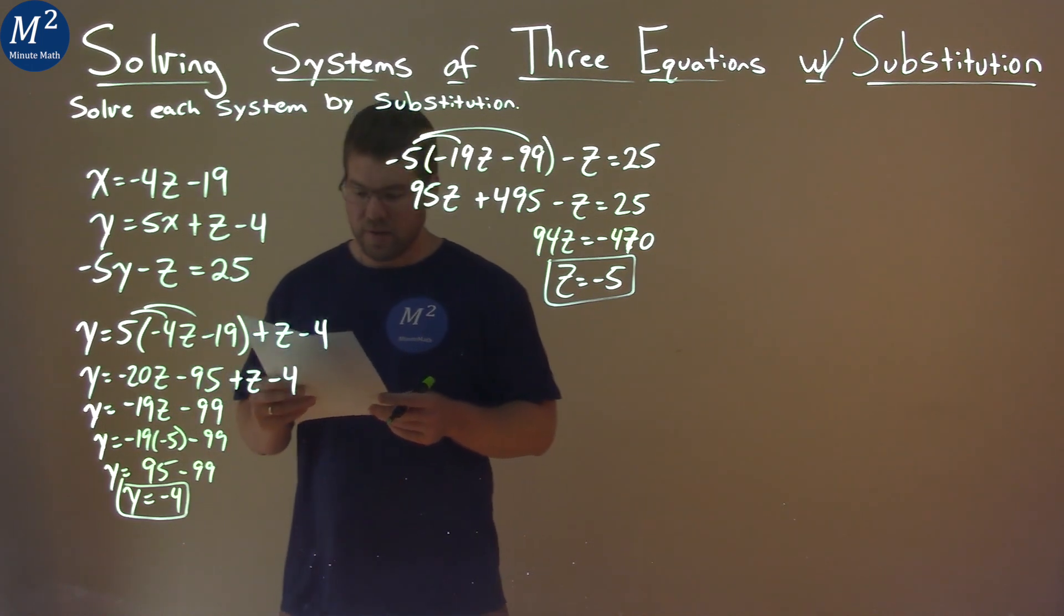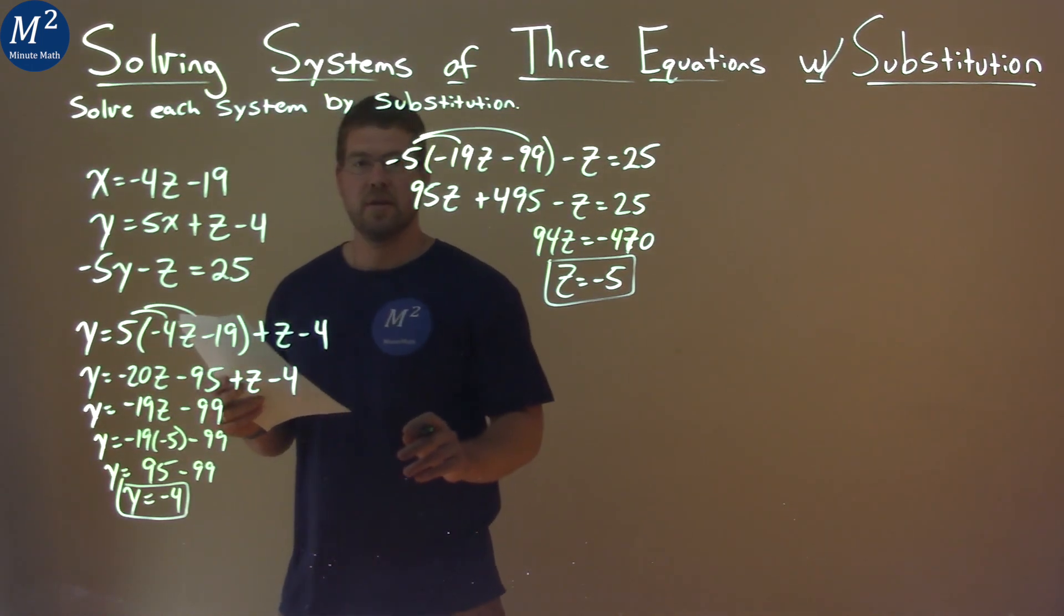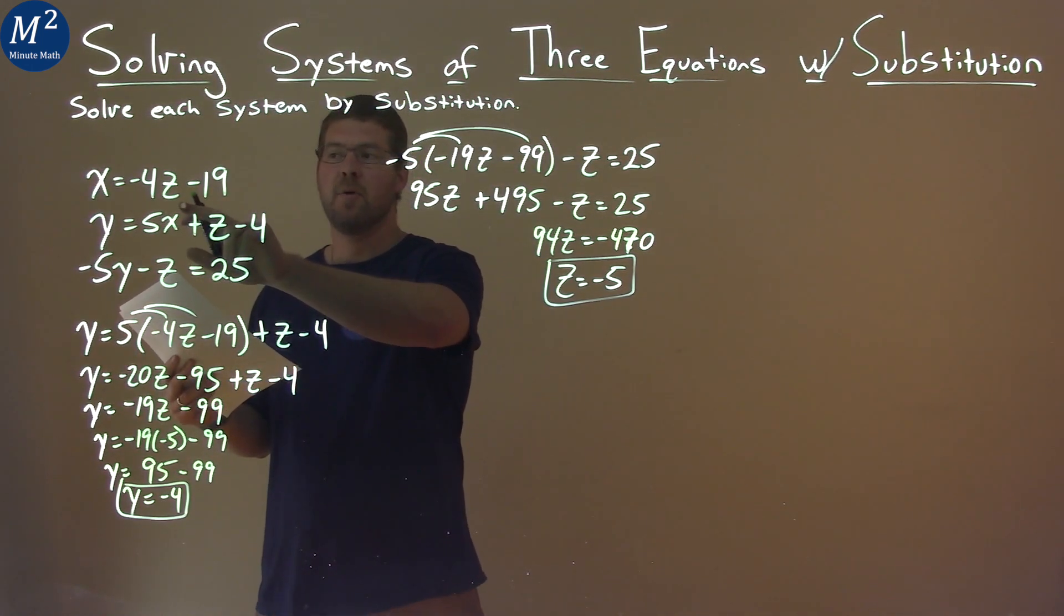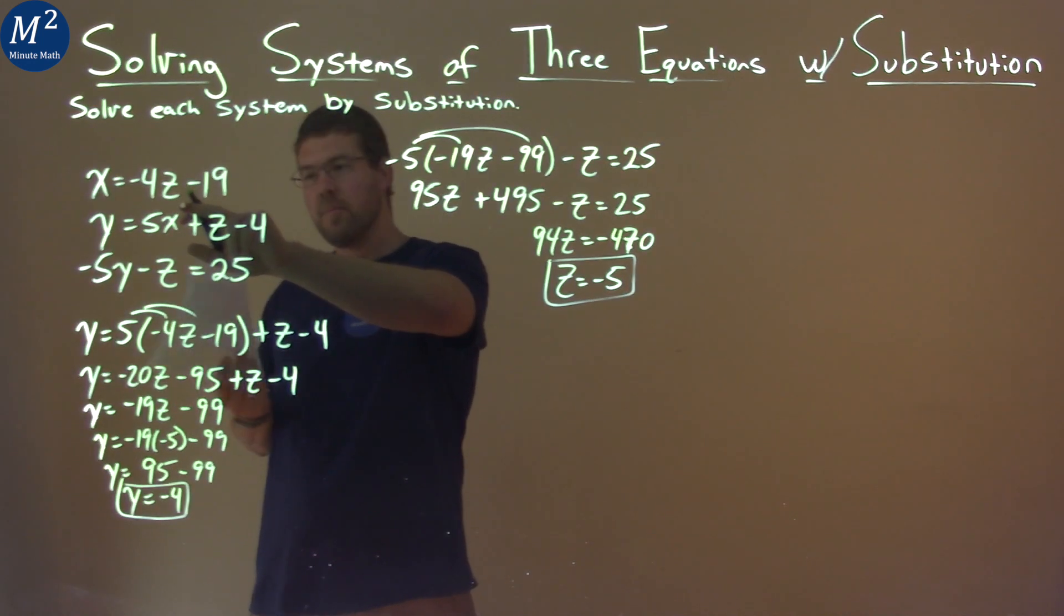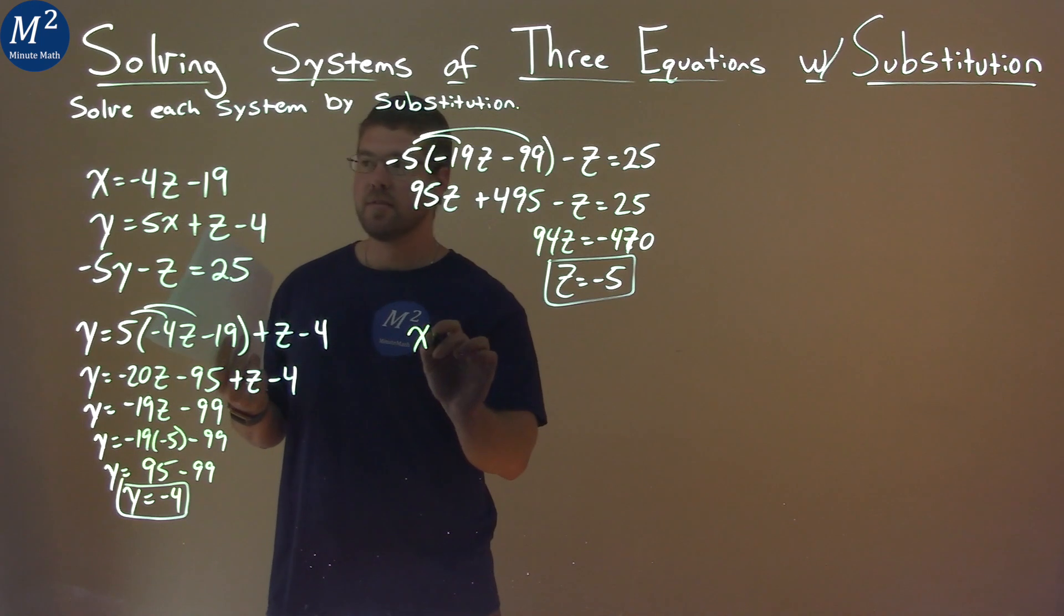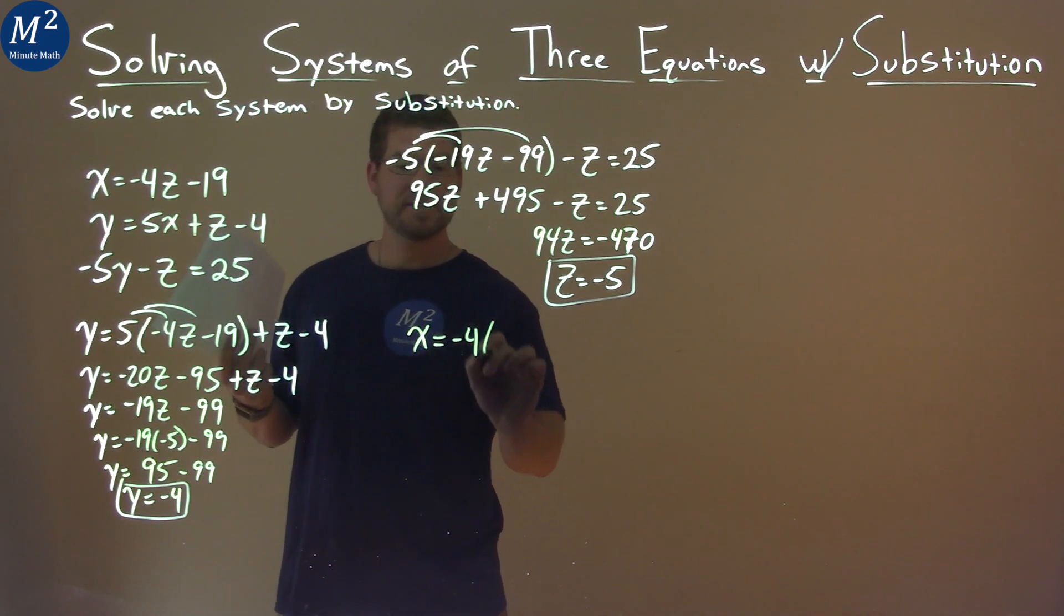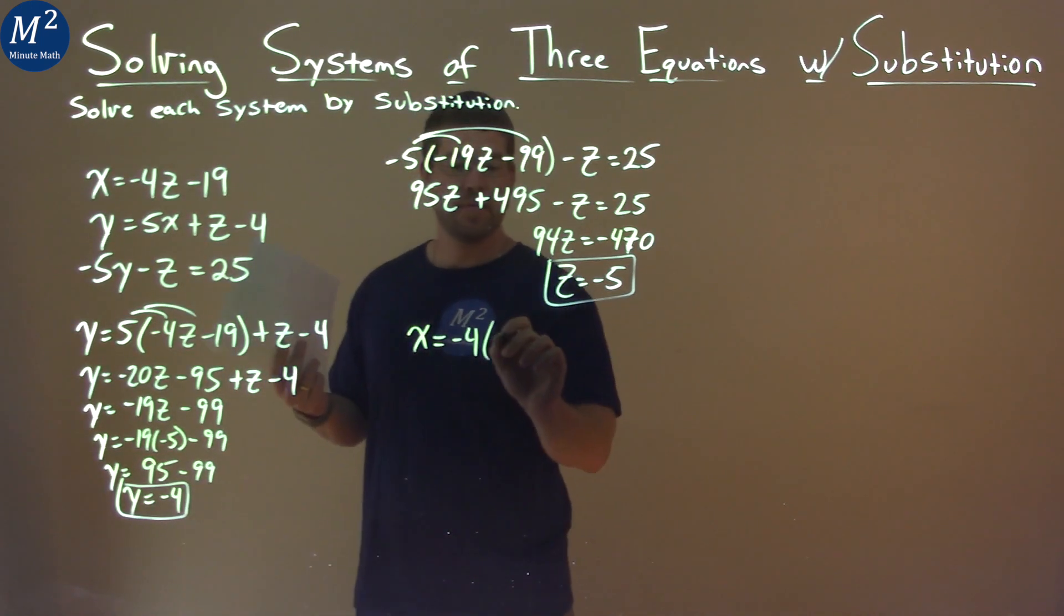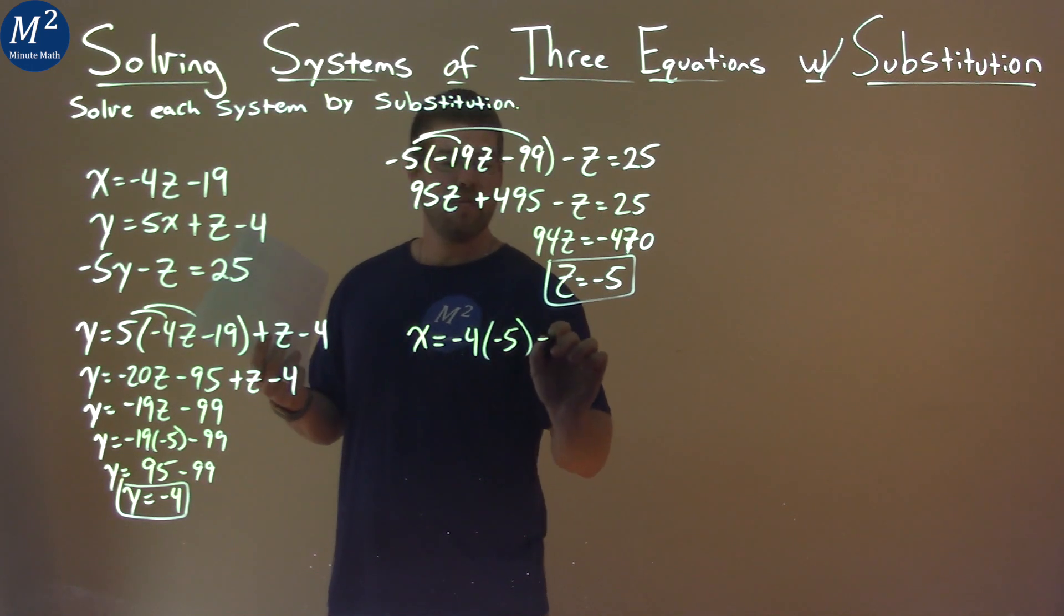So let's go find our x value. Our first equation here, we can use. It only has an x equals a part that has a z in it. So let's rewrite that. x equals negative 4, but instead of z, we're going to put negative 5 in. And then we have minus 19.